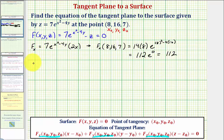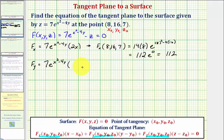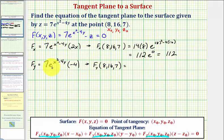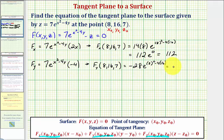Now we find the partial with respect to y, treating x and z as constants. The derivative of 7e^(x² - 4y) with respect to y is 7e^(x² - 4y) times the derivative of x² - 4y with respect to y, which is negative four. The derivative of z with respect to y is zero. At the point of tangency, we have 7 times negative 4, which is negative 28, times e^(8² - 4·16) = e^0 = 1. So the partial with respect to y is negative 28.